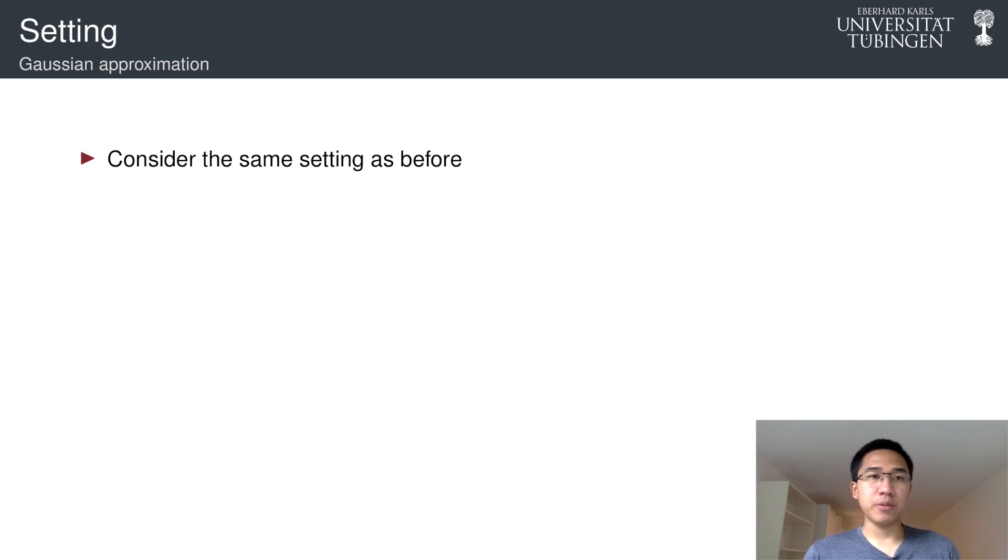So we know the problem and we will use the same setting to make our analysis. The crucial difference here is that we don't assume point estimation, but we assume now we have a Gaussian approximation over the distribution of the weights.